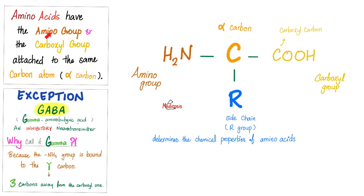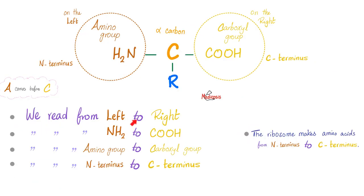Here's the beauty of the amino acids: they have their amino group and their carboxyl group attached to the same carbon, known as the alpha carbon. Is there an exception? Of course — every rule has exceptions. This is GABA. GABA stands for gamma amino butyric acid. We call it gamma because it's a gamma carbon, which is three carbons away from the carboxyl one. So after the carboxyl you have alpha, then beta, then the gamma carbon. In chemistry, we read from the amino group towards the carboxyl group.